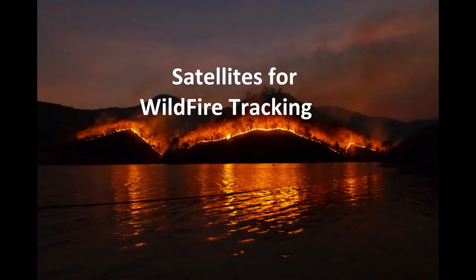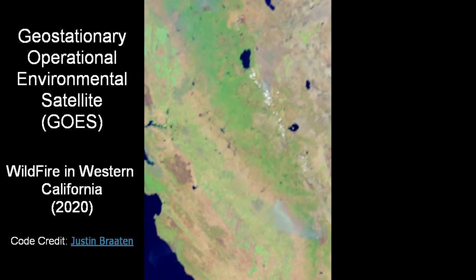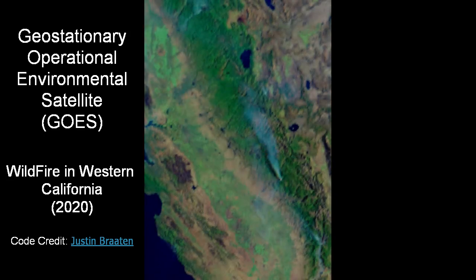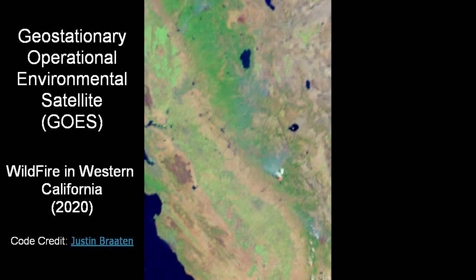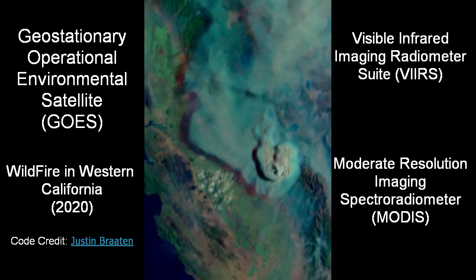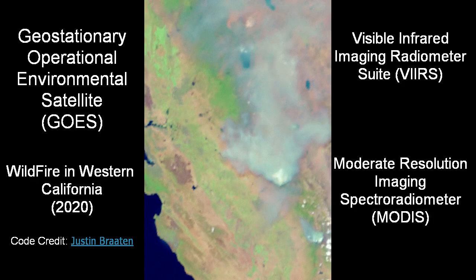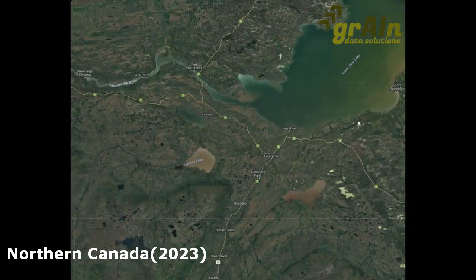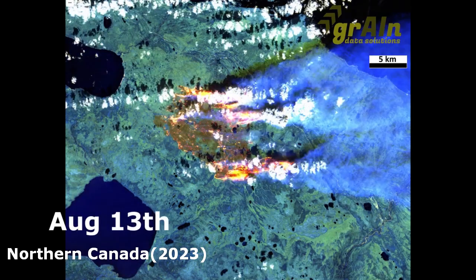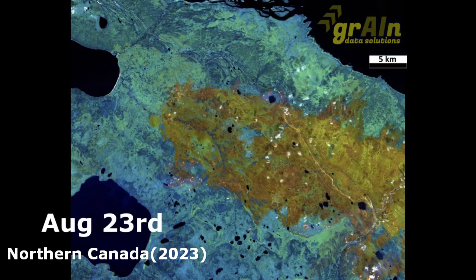Satellites are critically important for tracking the expansion and subsequent control of wildfires. There are a number of constellations useful for this task, for example, the Geostationary Operational Environmental Satellite, Visible Infrared Imaging Radiometer Suite, or Moderate Resolution Imaging Spectroradiometer. When needed, we tap into multiple image resources to provide firefighters and local communities the intelligence needed on direction and scale of wildfires to minimize potential damage.